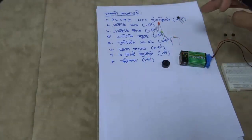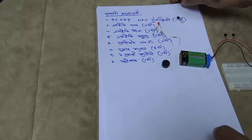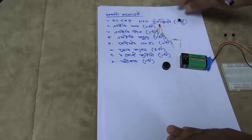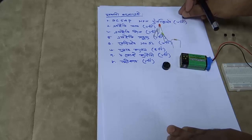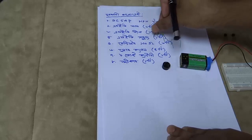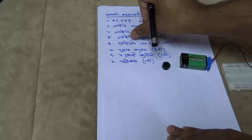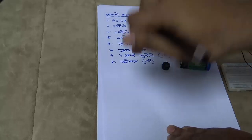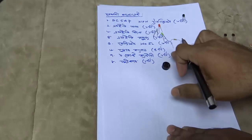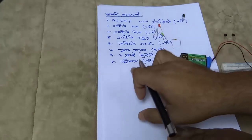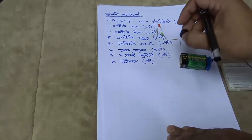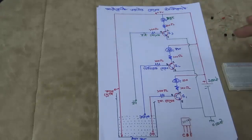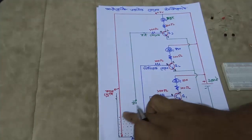Let's check out the components needed. We use 3 BC547 NPN transistors, red LED, green LED, yellow LED, 4 resistors, 4 probe cables, one 9V battery, and one speaker.